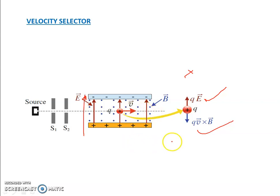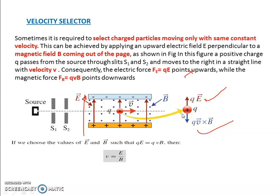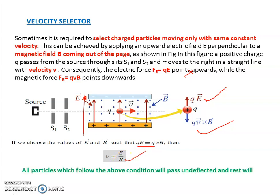In a velocity selector, there are two forces acting on a charge particle: the electric force due to the electric field (directed upward) and the Lorentz force due to the magnetic field. When these two forces are equal and opposite, the charge particle passes through undeflected, and the selected velocity is given by v = E / B.